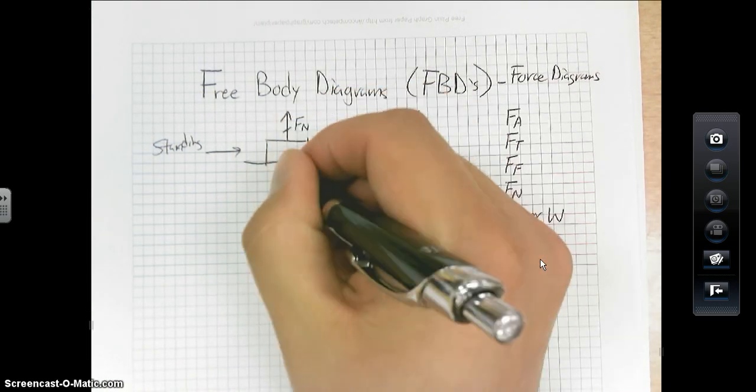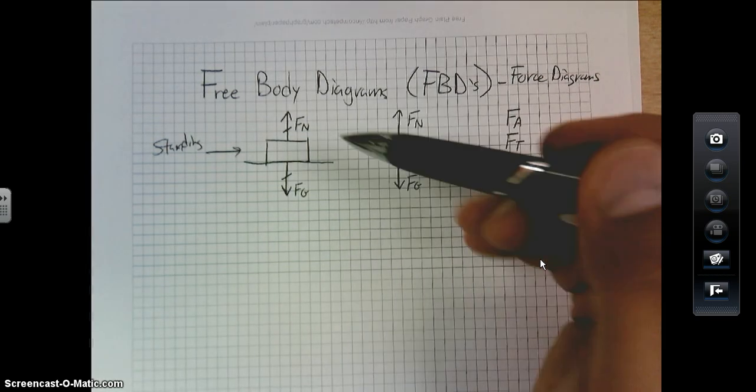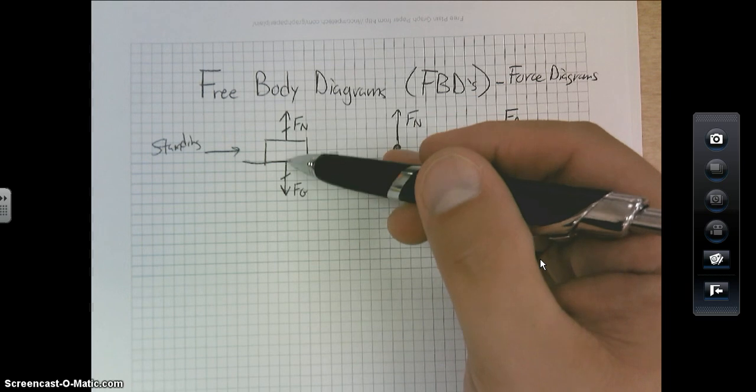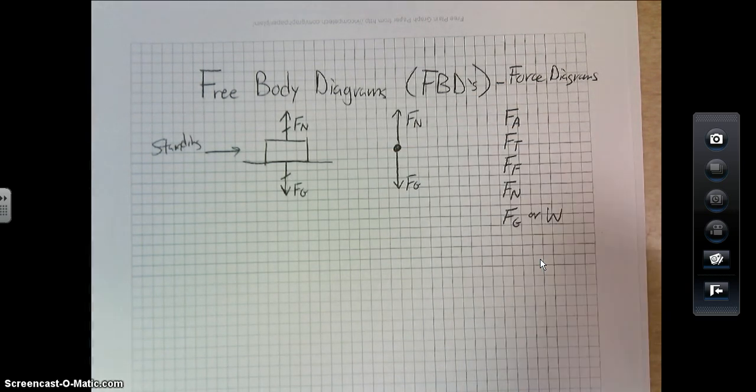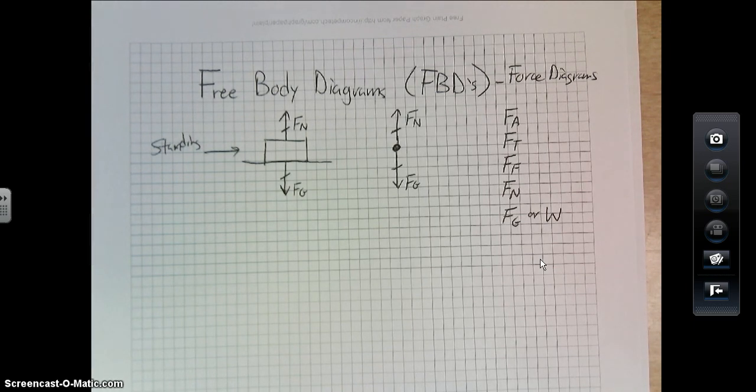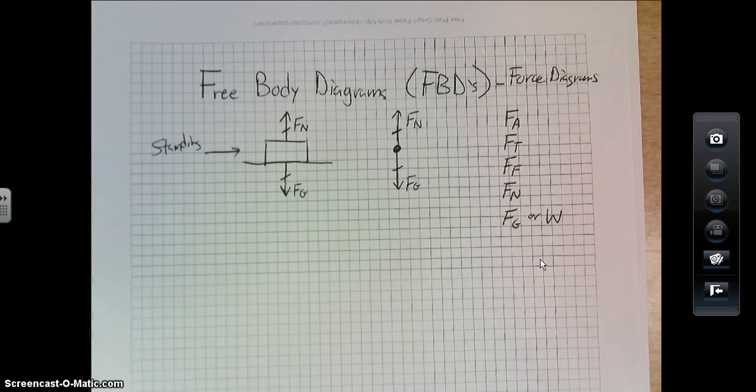So I like to use these little hash marks on here to represent that the normal force is equal to the gravitational force. And we could do the same thing with this picture. So this is just a basic outline of what a free-body diagram is. Now, I want to do a couple examples.